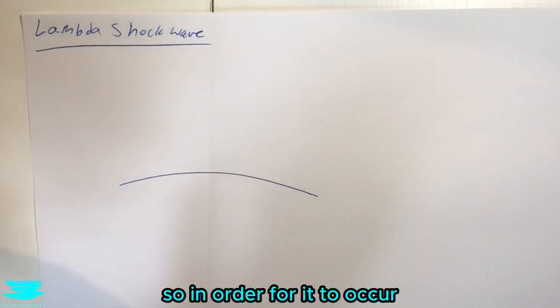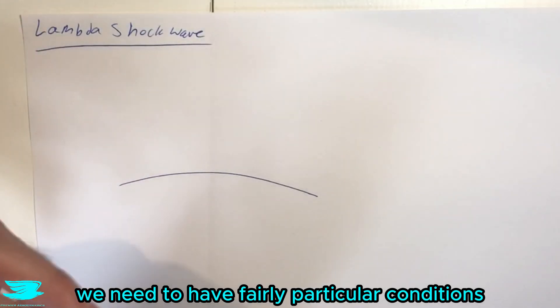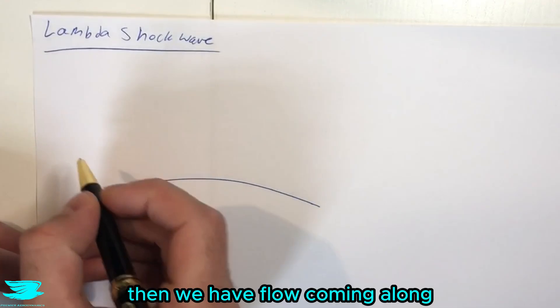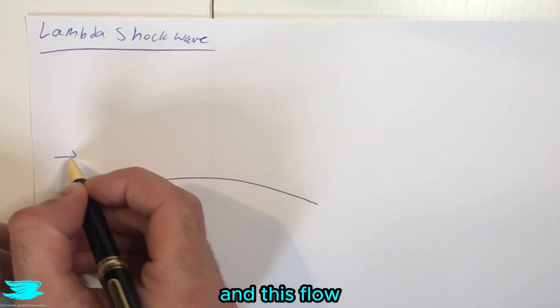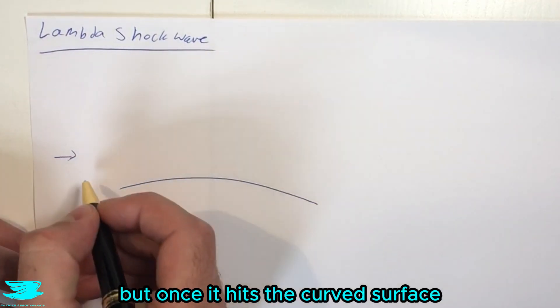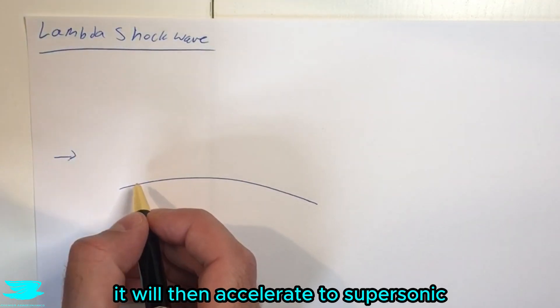So in order for it to occur, we need to have fairly particular conditions. To begin with, we have a curved surface. Then we have flow coming along. And this flow does not necessarily need to be supersonic yet. But once it hits the curved surface, it will then accelerate to supersonic.